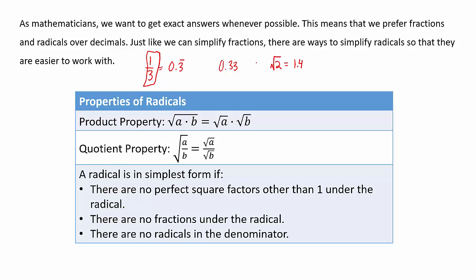Just like we can simplify fractions by reducing them, there are ways we can simplify radicals so they'll be easier to work with. Square root of 2 wouldn't be that hard to work with because 2 is small, but if we're talking about the square root of 80, every time I use it I have to deal with 80, which is going to be super tedious when there might be an easier way.